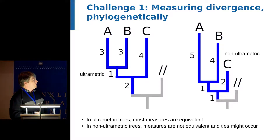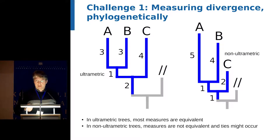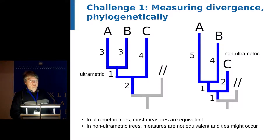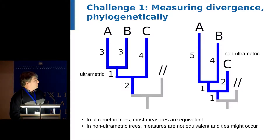This is not the case in a non-ultrametric tree. If we look for the maximum distance within subtree A, B, we find 9. And if we look into subtree A, B, C, the maximum distance is still between A and B and also 9. So we run into ties, which is not a good situation for estimating the best boundaries.